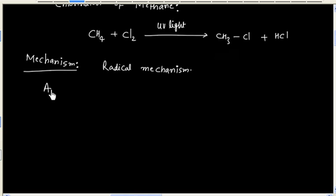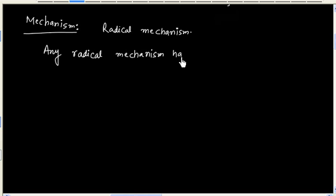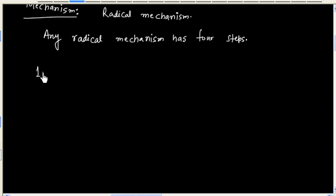Any radical mechanism has 4 steps. The first step is the chain initiation step.